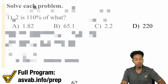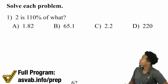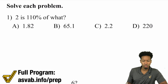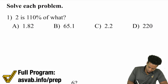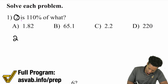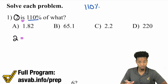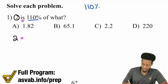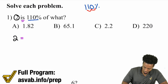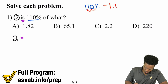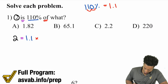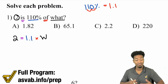Let's take care of this first problem: 2 is 110% of what? So 2 equals 110%. Whenever you're including a percent in a calculation, you need to turn it into a decimal. 110% as a decimal — move the decimal place over two times — that's 1.1. And remember that the word 'of' means multiply. So times some number, which we can call a question mark or W.